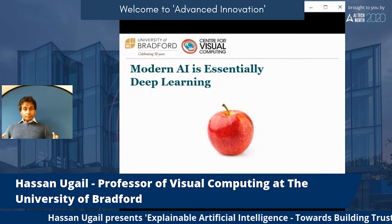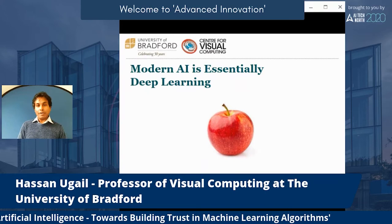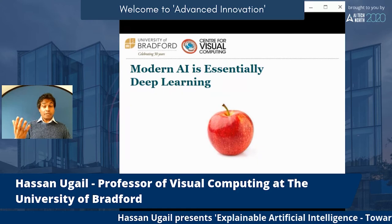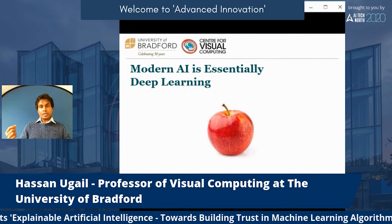Modern AI — and AI has existed for 50 years or more — is really about deep learning. Deep learning is about understanding how the human brain works, or how the neural structure in the human brain works, and utilizing that in a machine form.